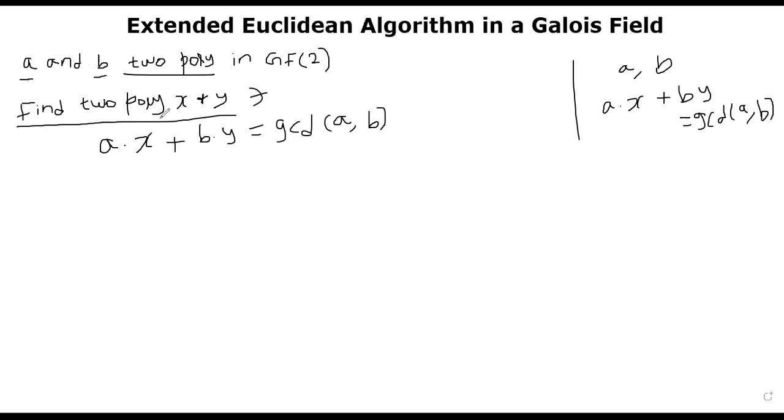The goal is to find two other polynomials. I'm going to use the same notation, although we rarely use small letters to denote a polynomial, but for this particular segment, X and Y are polynomials. So A times X plus B times Y is equal to GCD of A, B.